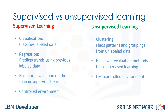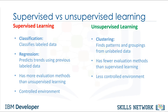So to recap, the biggest difference between supervised and unsupervised learning is that supervised learning deals with labeled data, while unsupervised learning deals with unlabeled data. In supervised learning, we have machine learning algorithms for classification and regression. In unsupervised learning, we have methods such as clustering. In comparison to supervised learning, unsupervised learning has fewer models and fewer evaluation methods that can be used to ensure that the outcome of the model is accurate. As such, unsupervised learning creates a less controllable environment as the machine is creating outcomes for us.